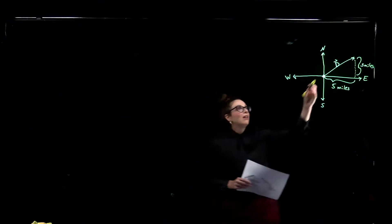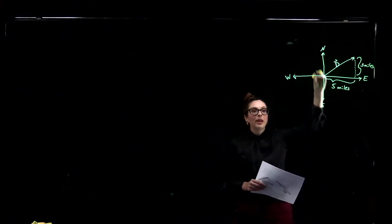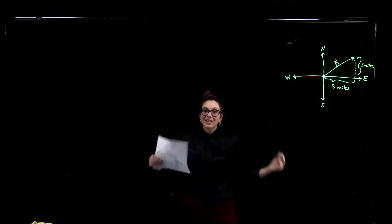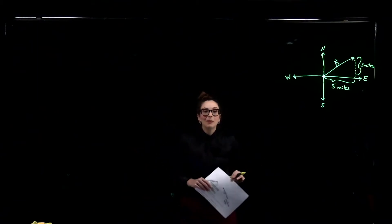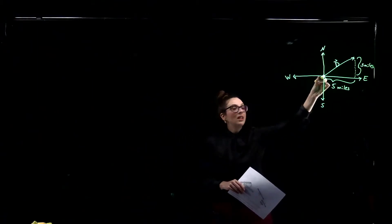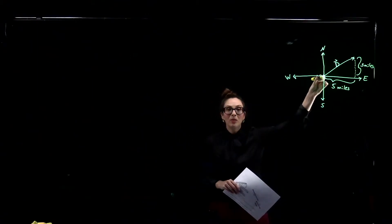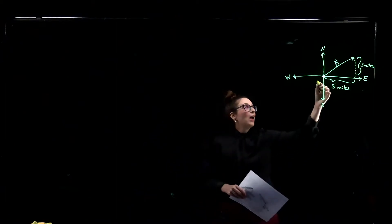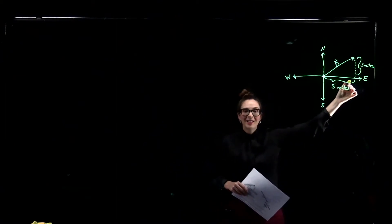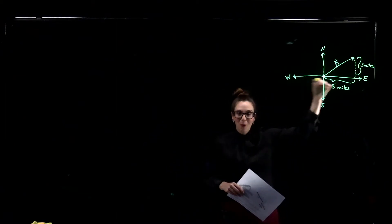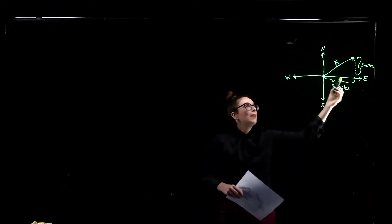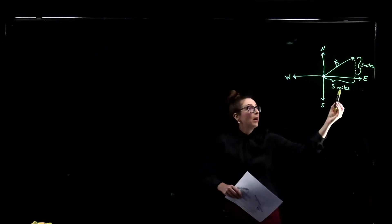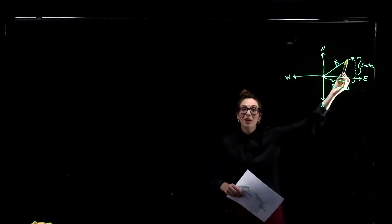Here I have my cardinal points — north, south, east, west — and you've got an example of two-dimensional motion. I started somewhere I'm defining to be the center of my coordinate system. I move five miles to the east; that's my horizontal component of motion. I move three miles to the north; that's my vertical component of motion.